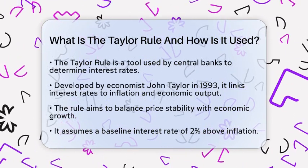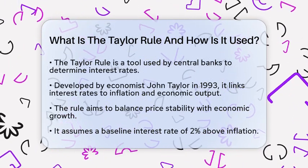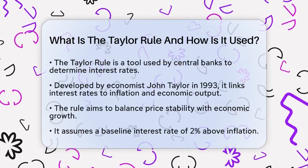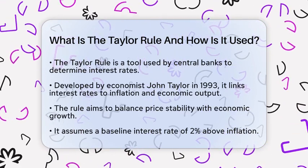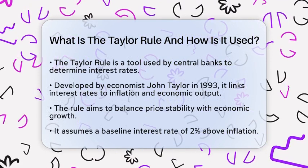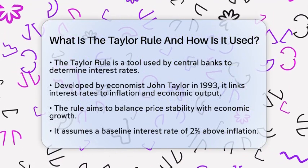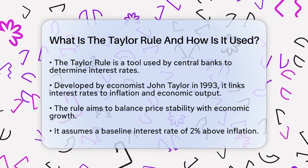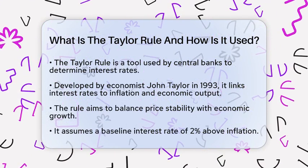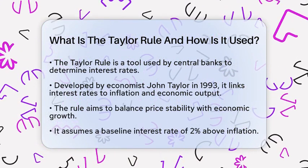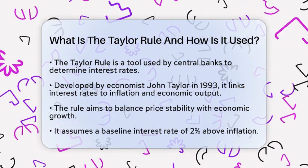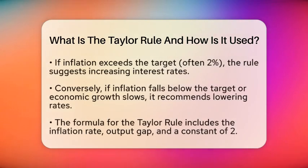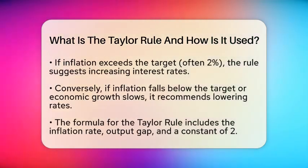The Taylor Rule assumes a baseline interest rate of 2% above inflation. When inflation rises above a target — often set at 2% — or when economic growth exceeds sustainable levels, the rule suggests raising interest rates. On the flip side, if inflation falls below the target or growth lags, it recommends lowering rates.